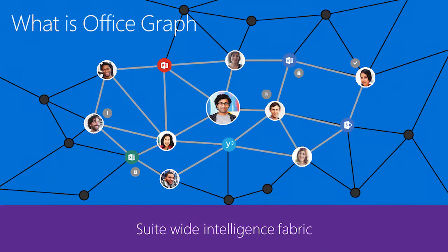What is Office Graph? Office Graph is the collection of signals that maps out people's activities across Office 365 and their relationships to other people and information. Office Graph pivots on people, analyzing the content, communications, and behaviors in an organization, and uses cloud-based machine learning to build intelligent insights.